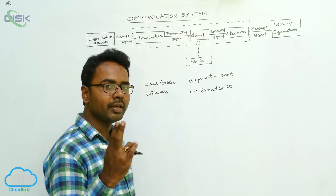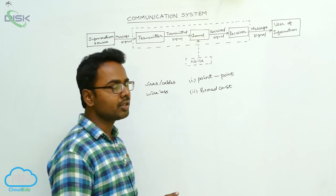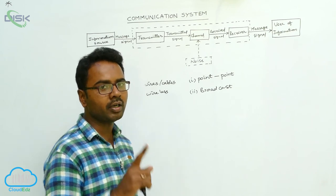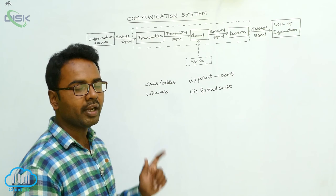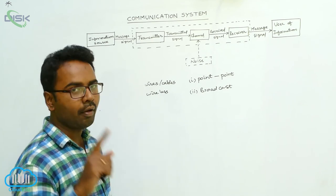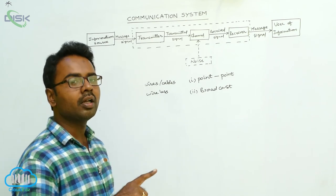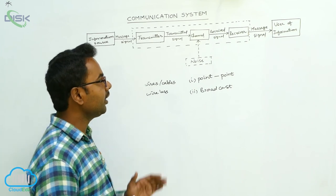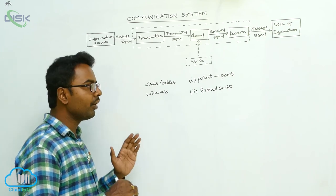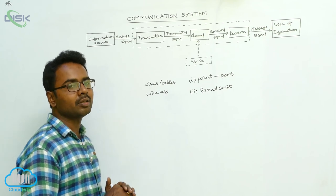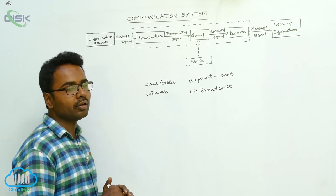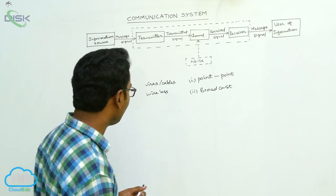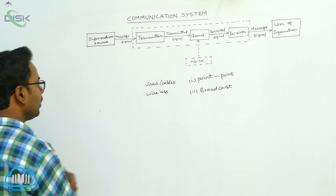So there are two basic modes of communication systems: the first is point-to-point communication, where one transmitter has one receiver; and the second is broadcast communication, where one transmitter has a number of receivers. Now, as we go further to understand communication systems, we should know some terms which we use frequently in this lesson. First of all, let's learn about a transducer.